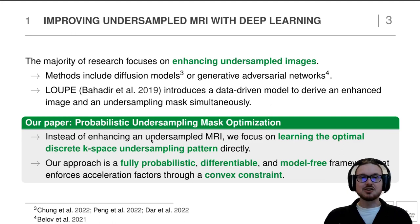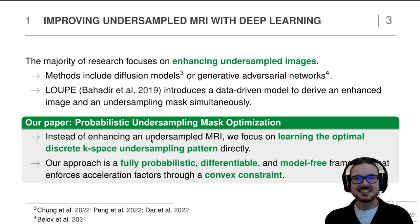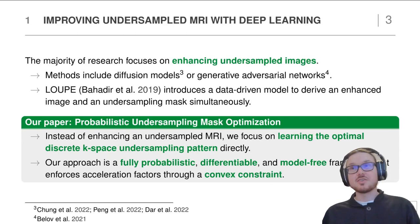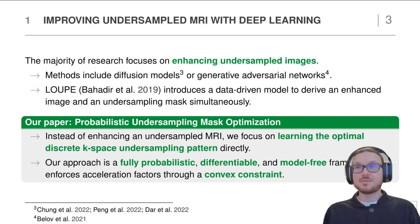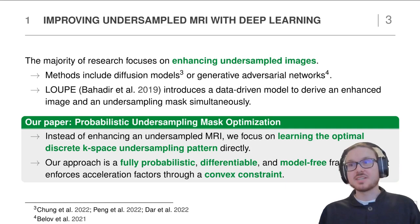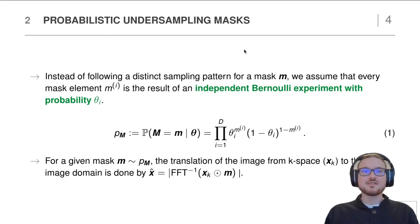This steers in the same direction as our work. In our paper we propose probabilistic undersampling mask optimization. Instead of enhancing the actual undersampled MRI, we focus on learning the optimal discrete k-space-based undersampling pattern directly. Our approach is a fully probabilistic framework, end-to-end differentiable, and does not employ any neural network, so it is very lightweight. We enforce an acceleration factor — the number of active mask elements — through a convex constraint. We dub our framework PROM, short for Probabilistic Mask Learning.